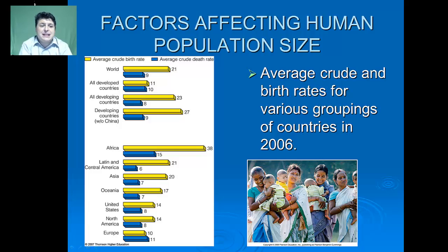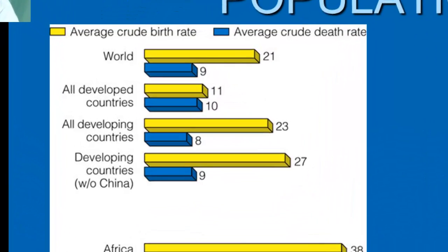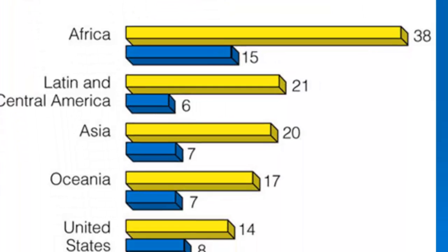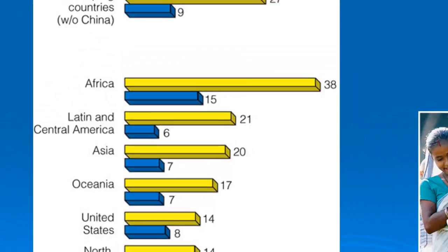Here we can see the average crude birth rates for various countries in 2006. All of the developed countries had a much lower birth rate than developing countries, especially places like Africa, Latin America, and Asia.